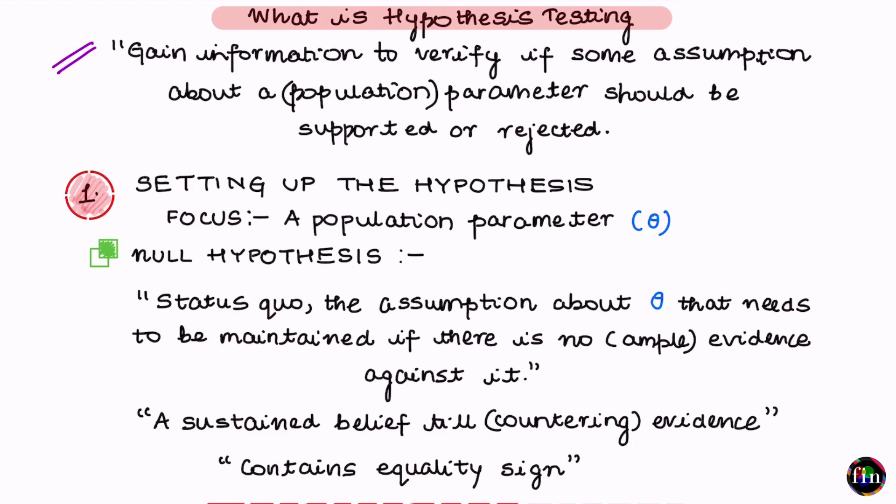Now assume that somebody within or outside your company has reported that the average life of 10,000 hours printed on your packaging is not correct. You firmly believe that for the entire population of bulbs manufactured and sold, 10,000 is indeed correct. But this person or organization is challenging that number. You want to verify using statistics and data whether this claim is correct — and that is what hypothesis testing is for.